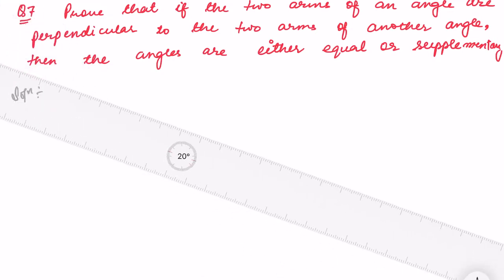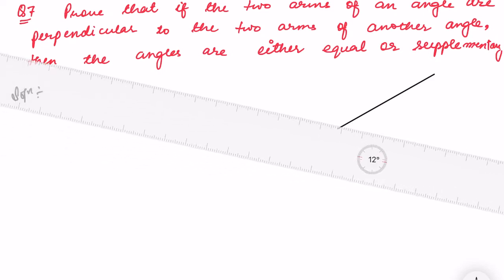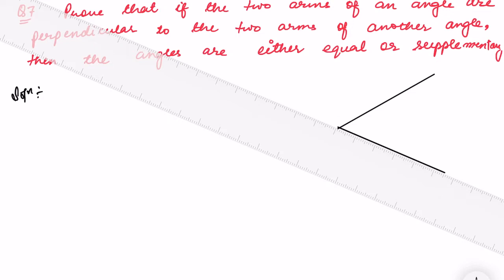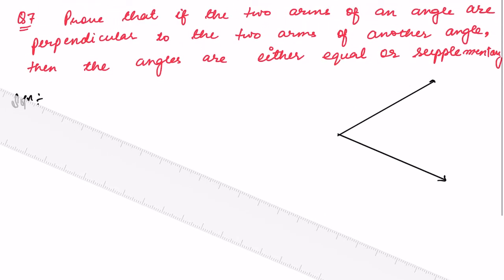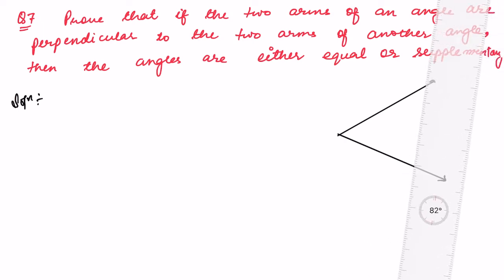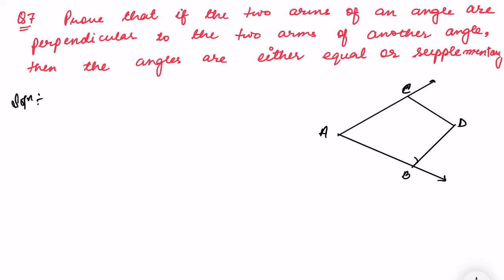Let us draw the diagram and understand it. There is an angle — let us draw that angle. The question says if two arms of an angle are perpendicular to two arms of another angle. So there is one angle which is perpendicular to this one. Let us label the points A, B, C, and D. This angle is 90 degrees and this one is also 90 degrees — angle A and angle D are the two given angles, and these two arms are perpendicular.